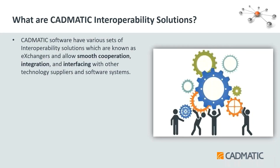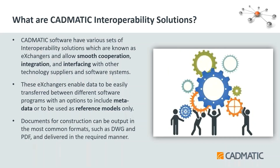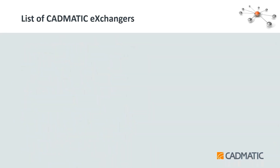CADMATIC software has a various set of interoperability solutions known as exchanges, which allow smooth cooperation, integration, and interfacing with other technology suppliers and software systems. These exchangers enable easy transfer between software and give you the option of whether you want to include the data or just use it as a reference model. Once your model is there, you can extract any kind of document — whether it's DWG, PDF, or DXF. In CADMATIC, interoperability and exchanger are conceptually the same.